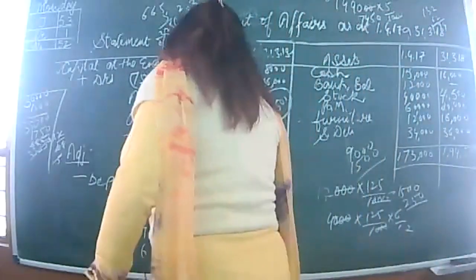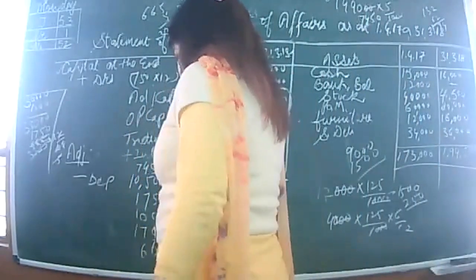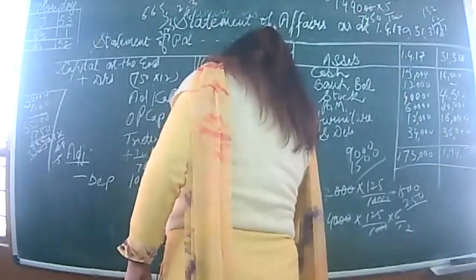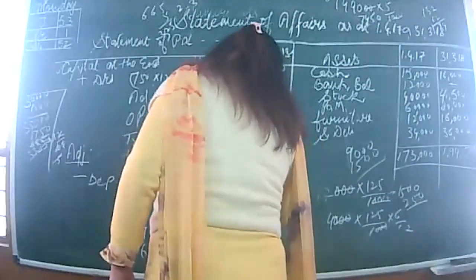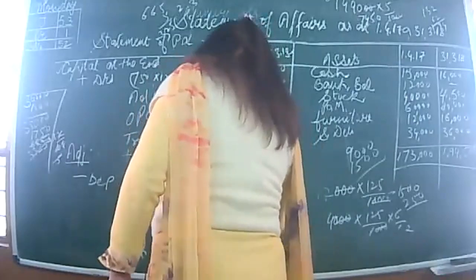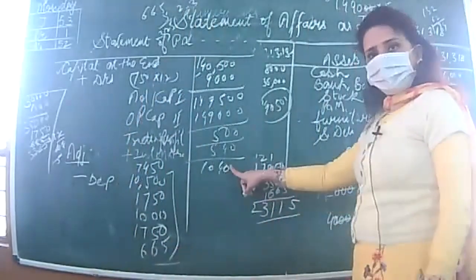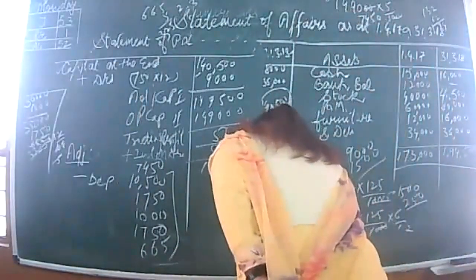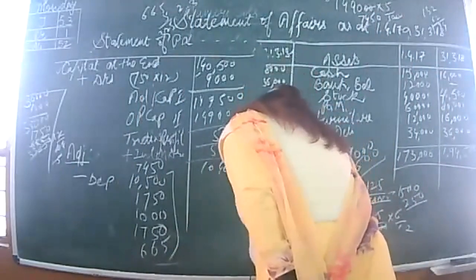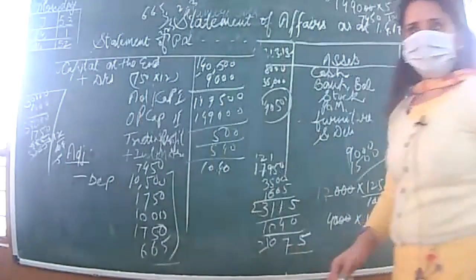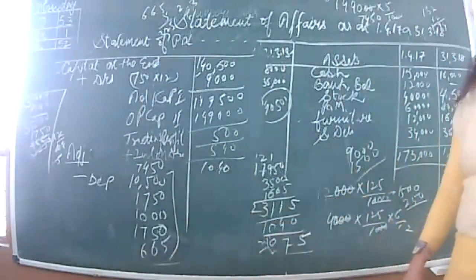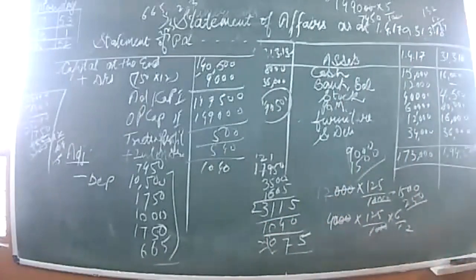Adding all the adjustments: depreciation on machine 10,500, depreciation on furniture 1,750, bad debts 1,000, provision for bad debts 1,750, provision for discount 665, and interest on capital 7,450. Total adjustments come to approximately 23,115. After deducting the total adjustments from trading profit of 1,040, the result is a net loss. The answer comes to approximately 22,075 net loss.